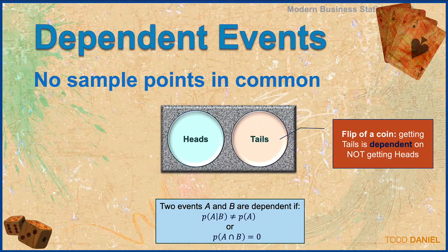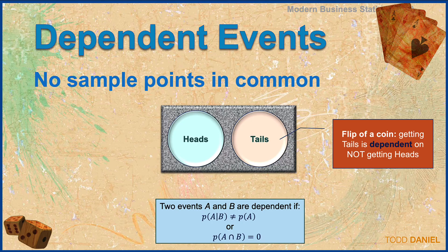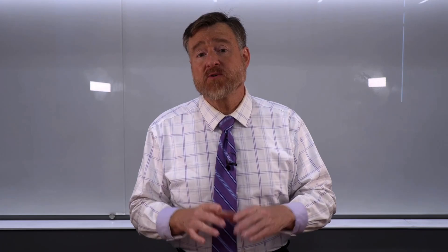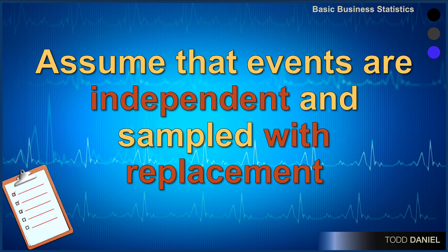Dependent events have no sample points in common. For example, flipping a coin — the two outcomes are heads and tails. You must get one and only one outcome; you can't have both, you can't have neither. Getting tails is dependent upon not getting heads. Two events A and B are dependent if the probability of A given B is not equal to the probability of A, or the intersection of A and B equals zero. When we do statistical experiments, there are two assumptions you should make unless the problem tells you otherwise: assume that events are independent and sampled with replacement.